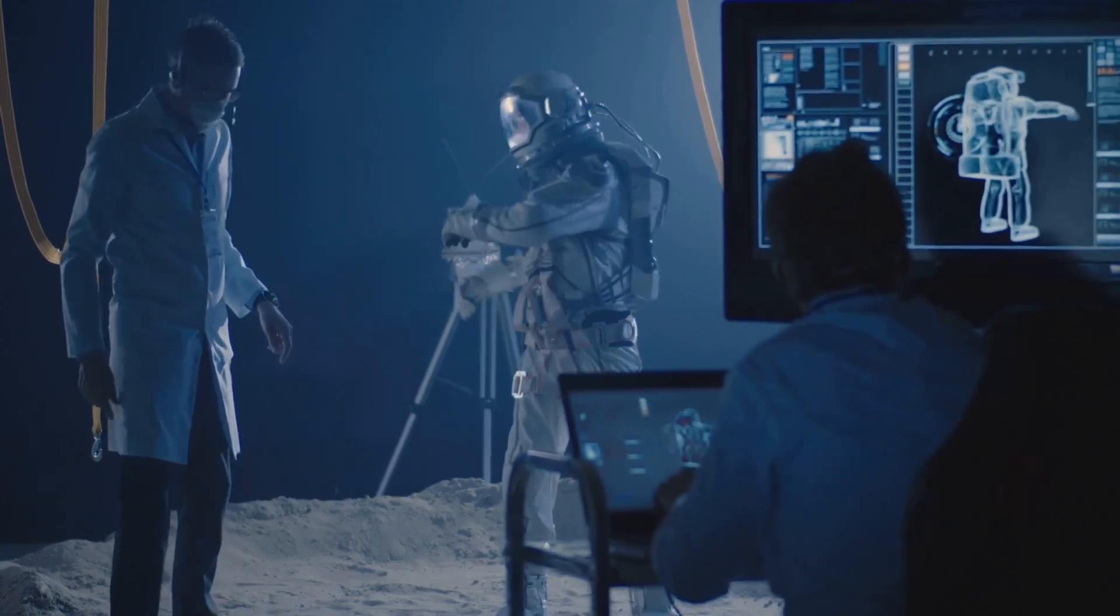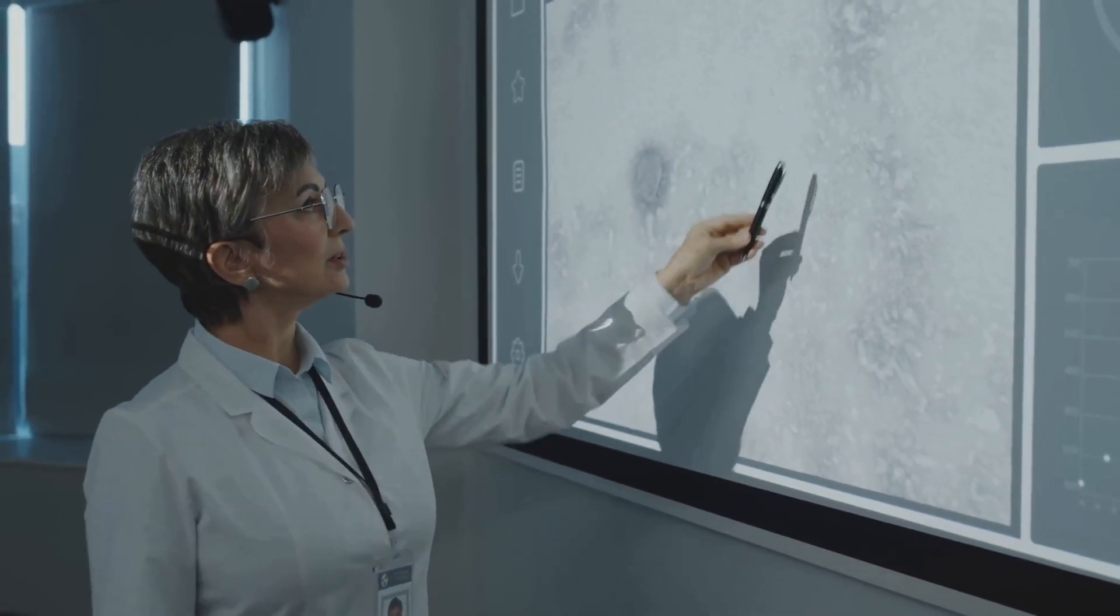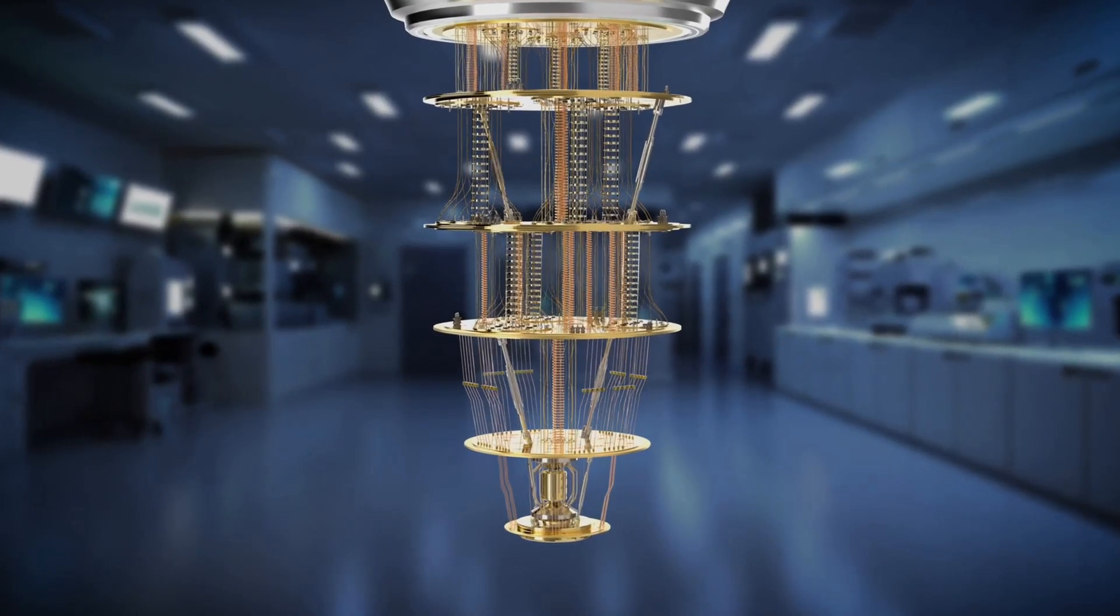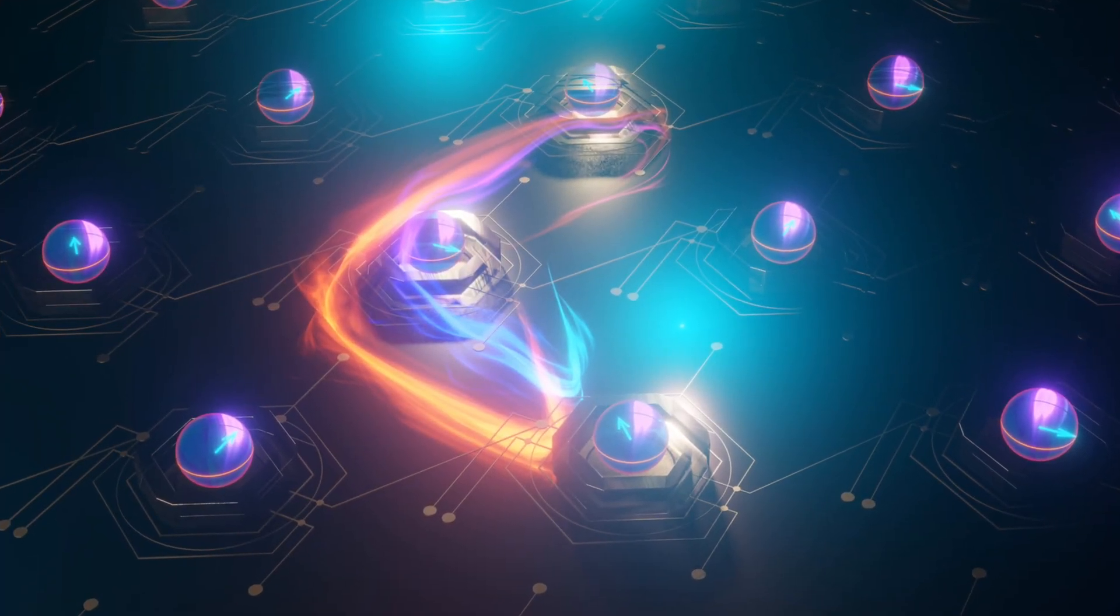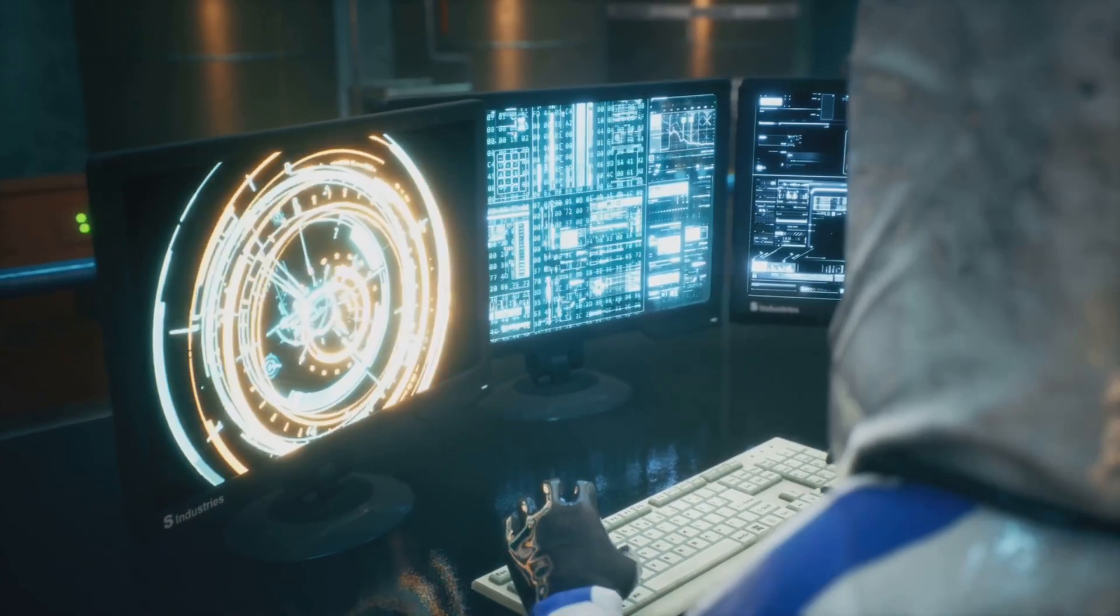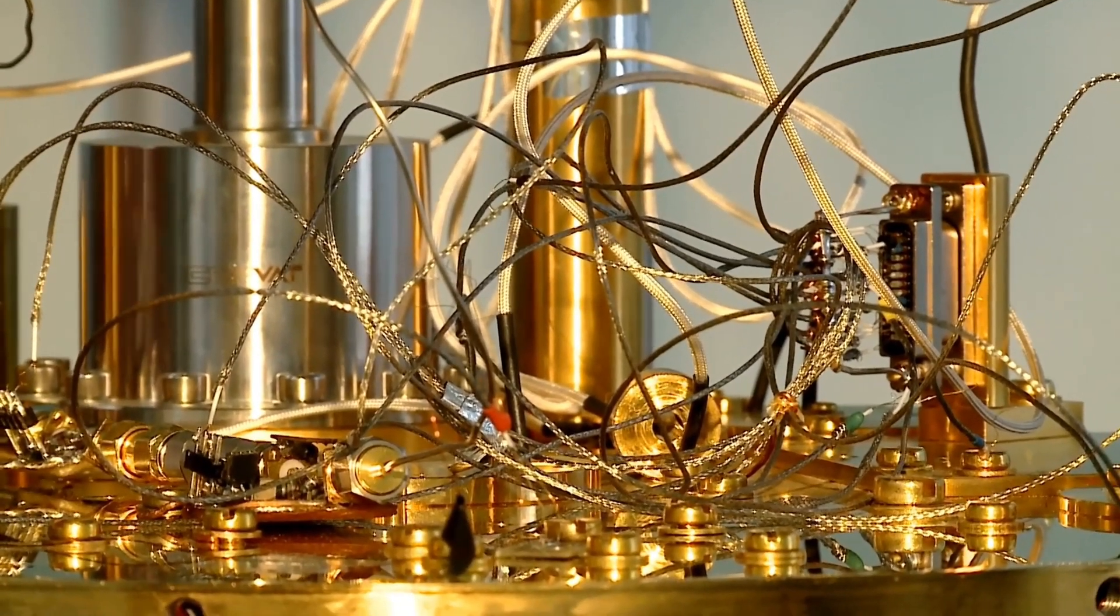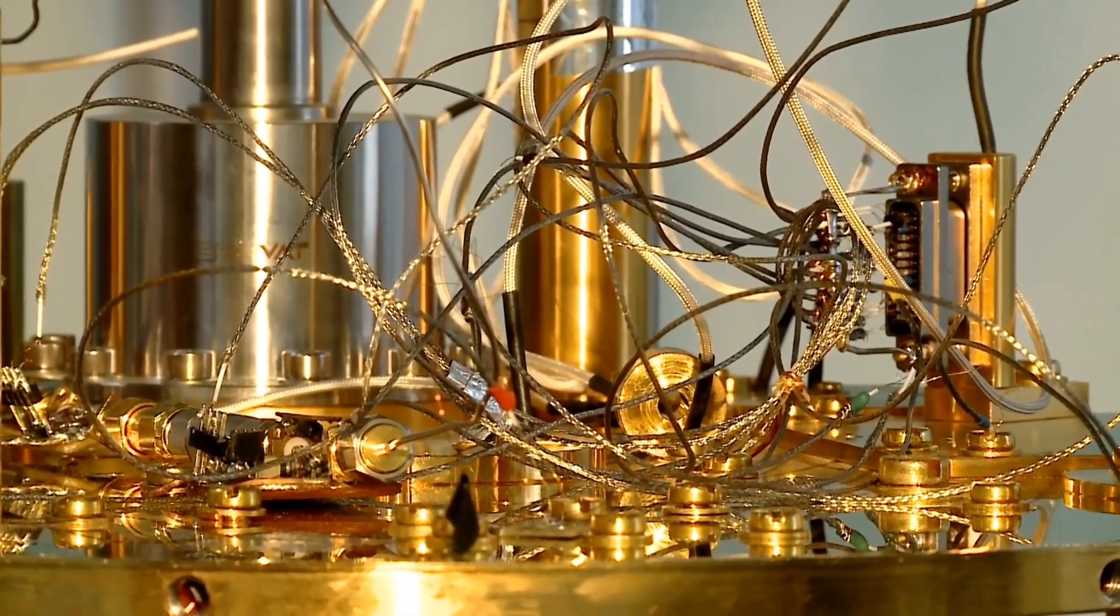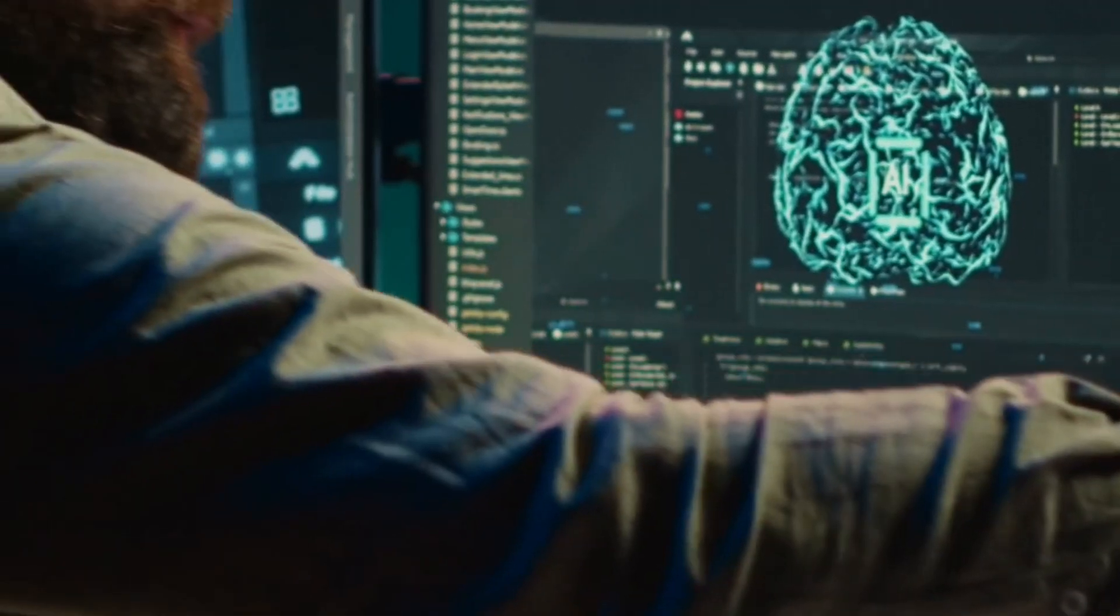This opens up new possibilities in fields such as cryptography, material science, and complex system simulations. Superposition is a mind-bending concept. It allows a qubit to exist in multiple states simultaneously. Imagine spinning a coin. It's not heads or tails until it lands. A qubit in superposition is like that spinning coin. It's in both states at once until we measure it. This both at once capability is what gives quantum computers their incredible power. By harnessing superposition, quantum algorithms can explore many possibilities simultaneously. This dramatically speeds up computation for certain types of problems.